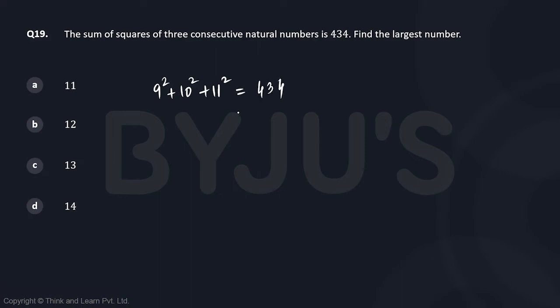So now we don't have to square it. All we have to do is check the last digit. 9 squared is going to end in 1, 10 squared is going to end in 0, 11 squared is going to end in 1. The sum of the unit places is not 4, so a is not our answer.